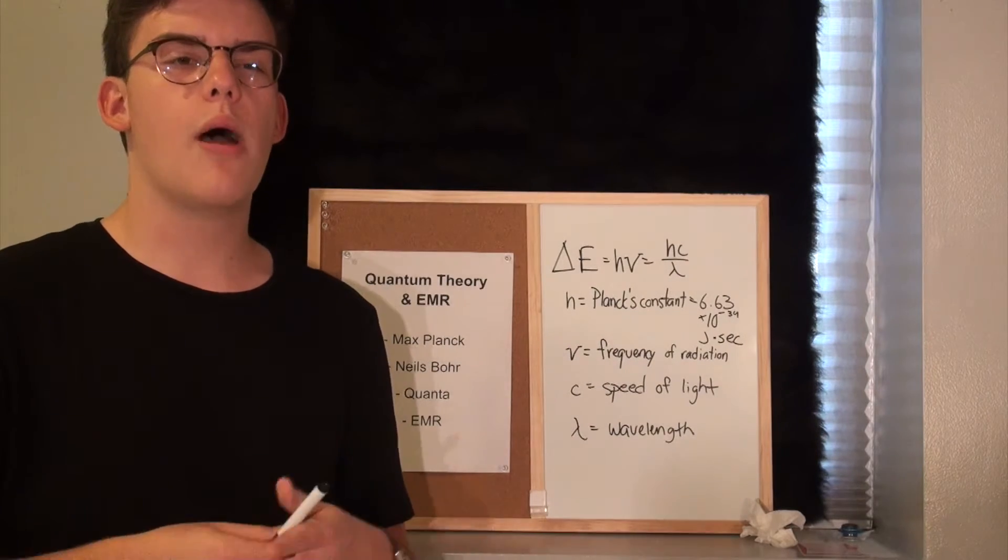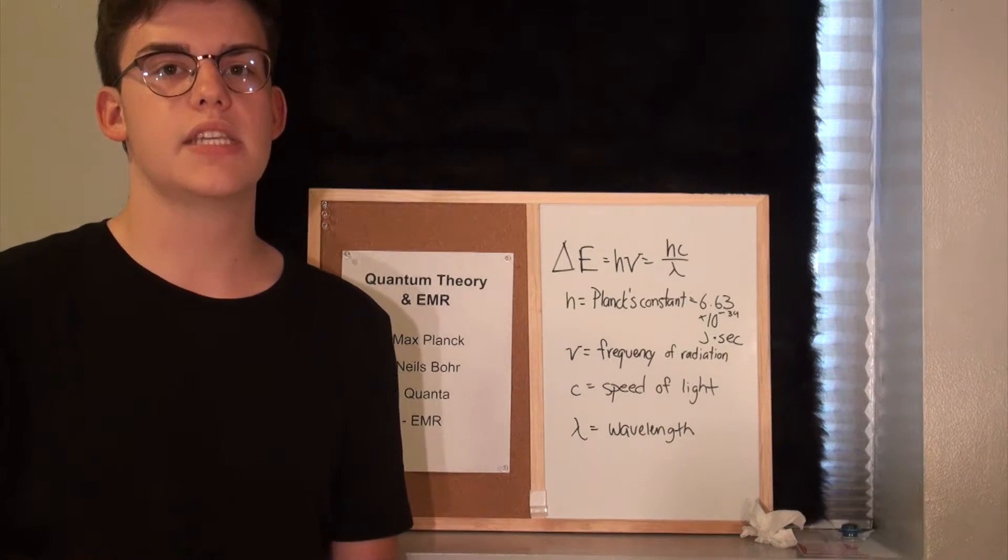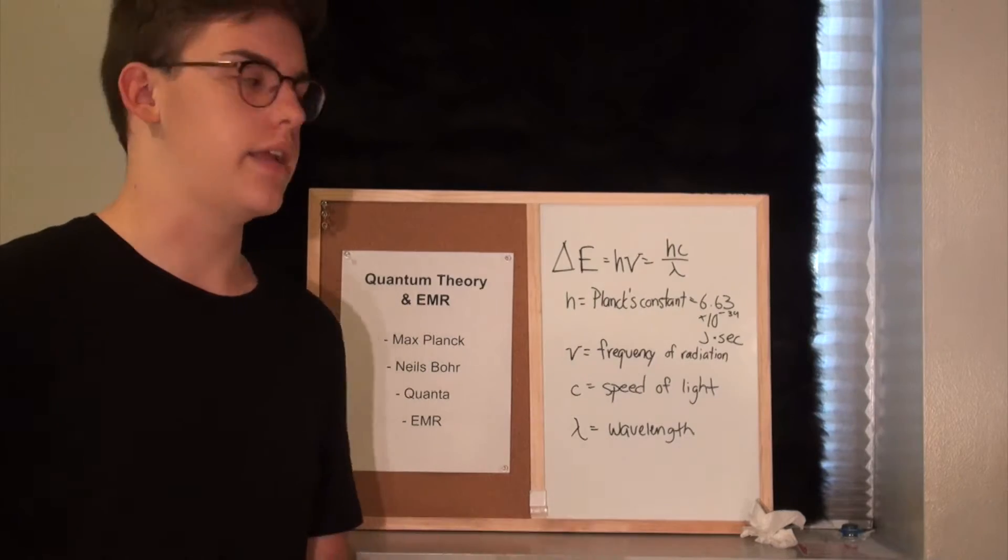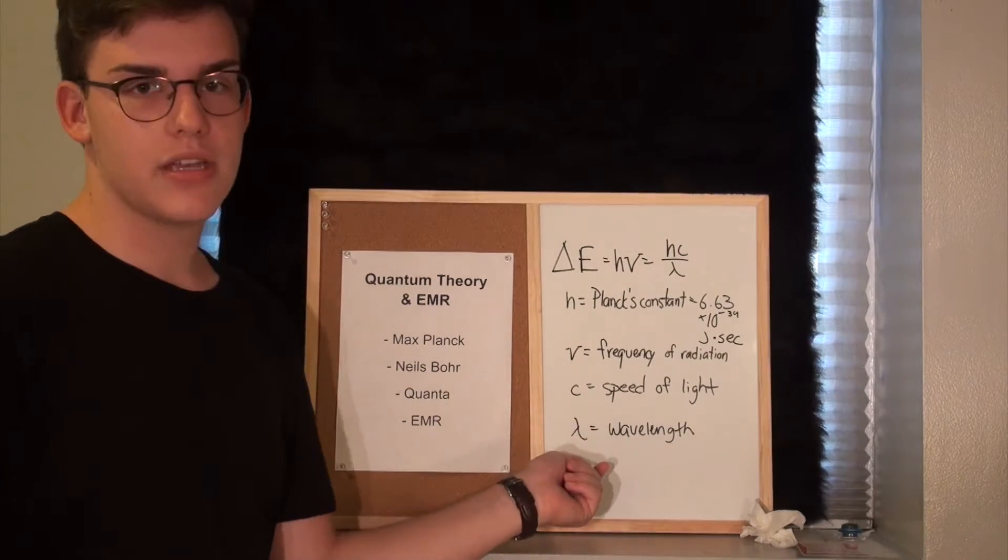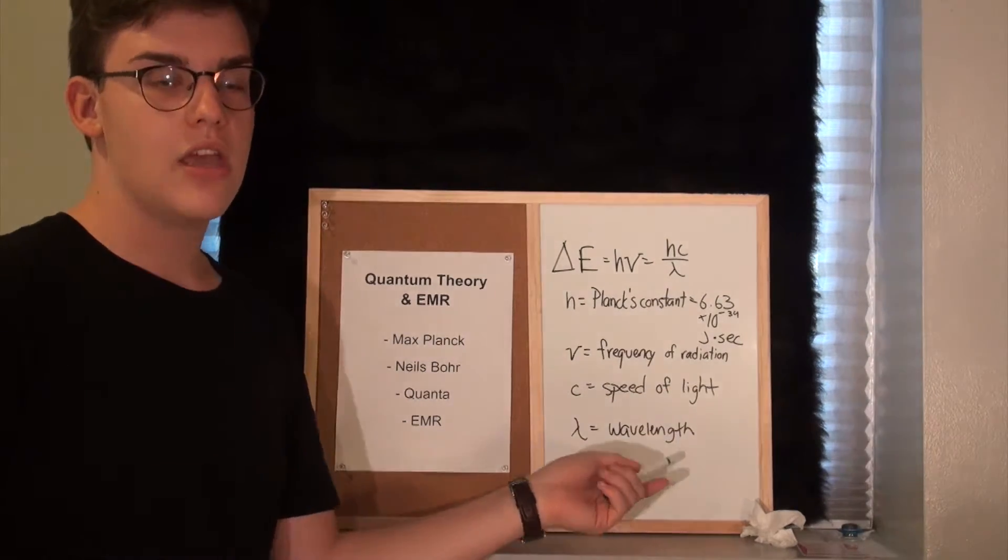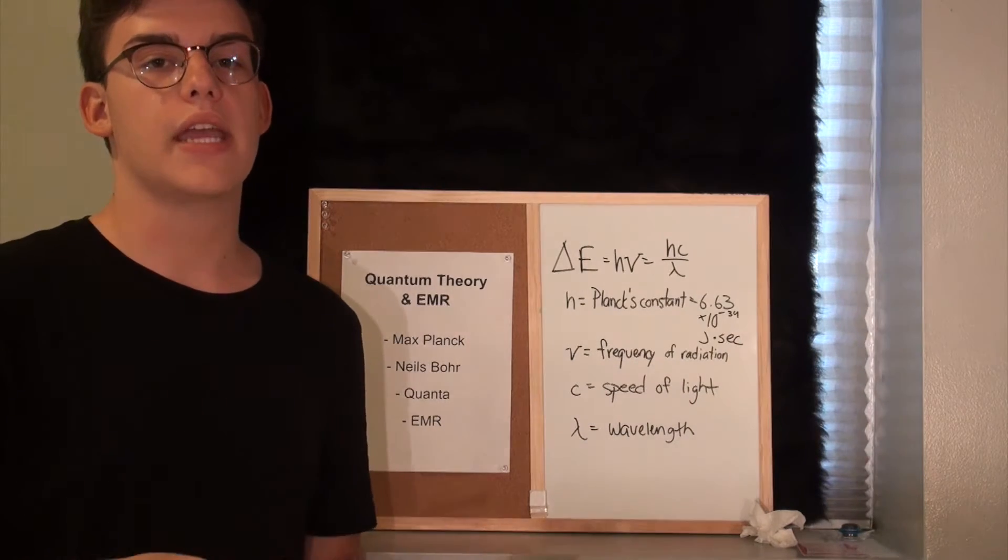C is the speed of light, or approximately 3 times 10 to the eighth power meters per second. That's really fast. And then you have lambda, which is equal to the wavelength, which is usually also recorded in nanometers.